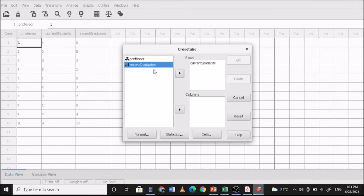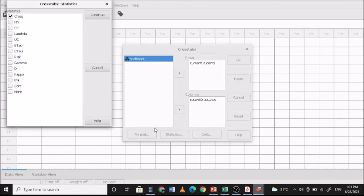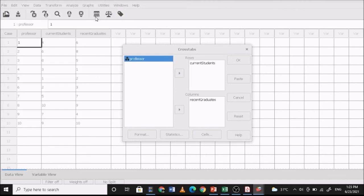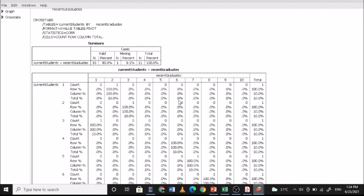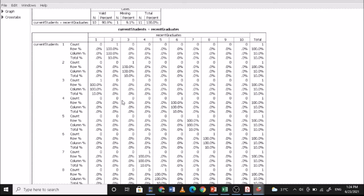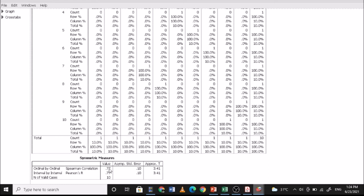You select your rows and your columns. In Statistics, we use Correlation. And then this is now the symmetric measure. There is a Pearson R here which shows a 3.41 approximated T, and a Spearman correlation which also showed a 3.41 approximated T.